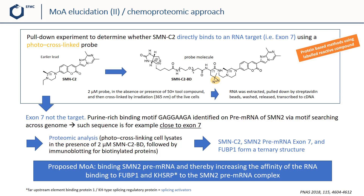The SMNC2 compound, the SMN2 pre-mRNA exon 7, and the splicing activator FUBP1 form a ternary structure. The ultimate mechanism of action is that the drug compound binds the SMN2 pre-mRNA and increases the affinity of the RNA binding to the splicing activator FUBP1, alongside another activator. This mechanism ultimately leads to increased production of exon 7-containing RNA and downstream to increased levels of functional protein.